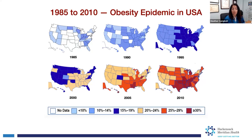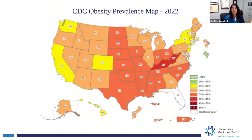Every five to ten years it has been recalculated, and a new color shows up on the map as the percent continues to increase. Most recently, last year's data in 2022, two states — Kentucky and West Virginia — have obesity rates in the 45 to 50 percentile range. That is clearly an epidemic.